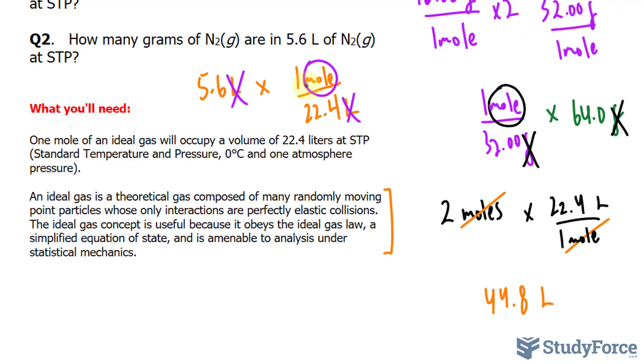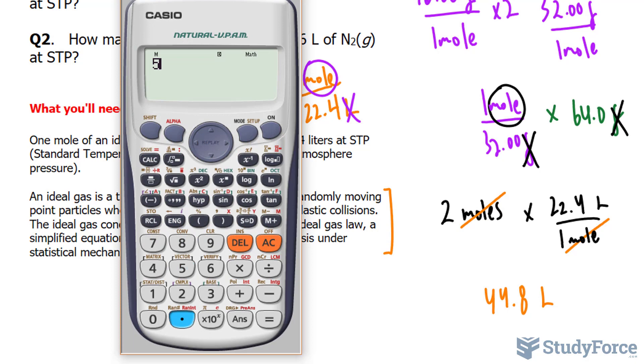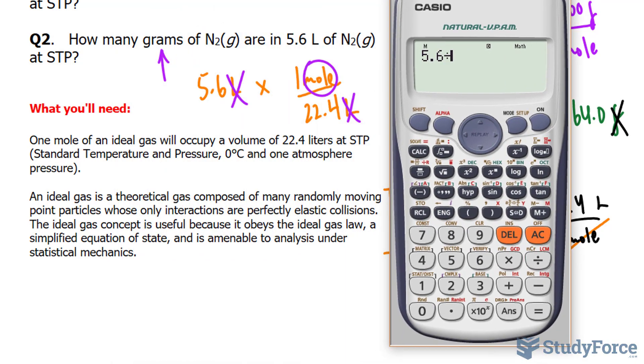We need the amount of moles along with the molar mass to find the mass in grams. So, let's do one step at a time. We'll take 5.6 and divide that by 22.4.